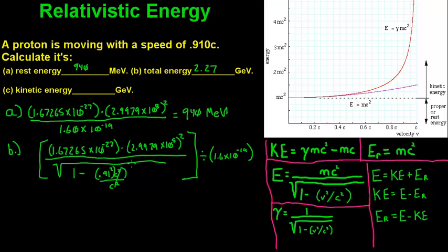Now for kinetic energy, Part C — since we know those two values, it's pretty simple. The total energy is equal to your kinetic energy plus your rest energy. So you can rearrange that: kinetic energy equals total energy minus rest energy. We've got our rest energy and our total energy, so we just subtract the rest energy from the total energy.